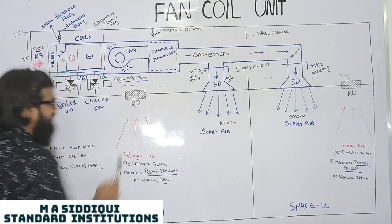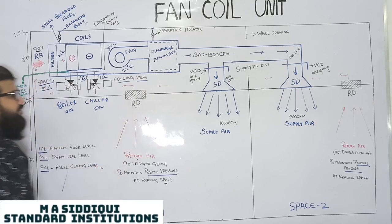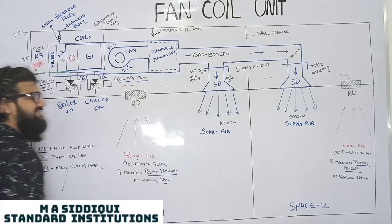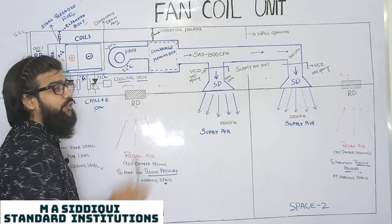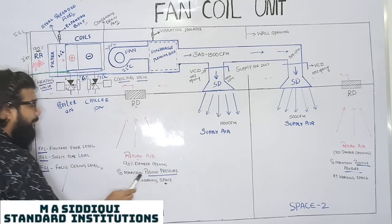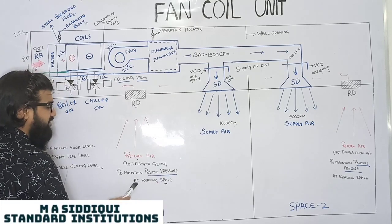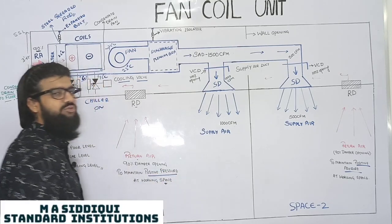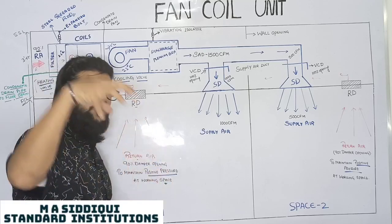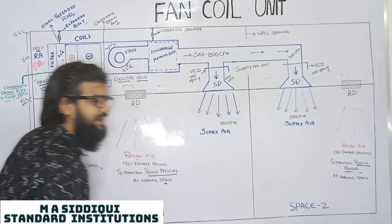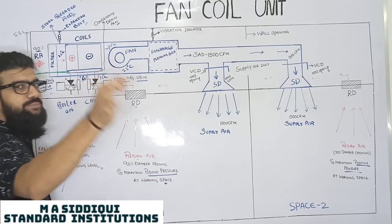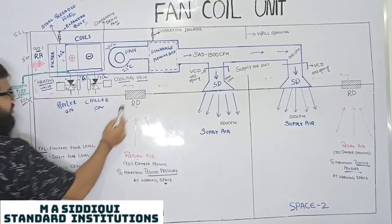While the return air is going from the return diffuser of both spaces, only 90% air will be taken, not 100%. Why? To maintain the positive pressure at the working space. The supply air will be more and the return air will be less compared to supply to maintain positive pressure.